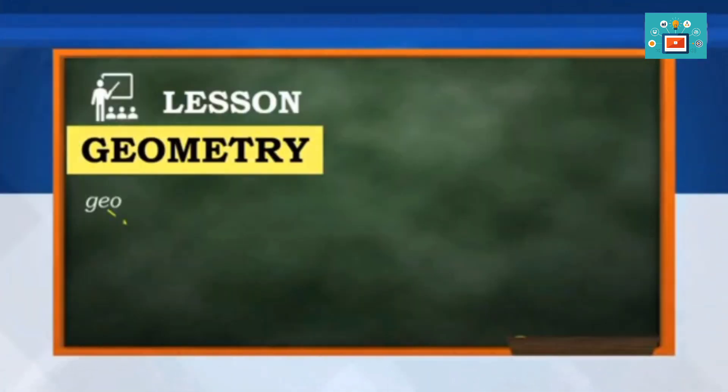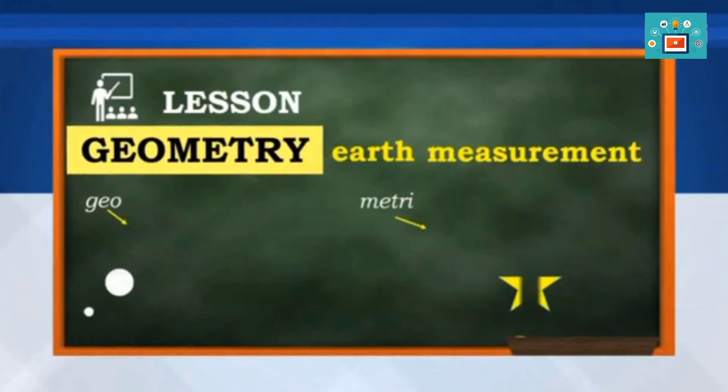Let me share to you facts about geometry. It comes from two Greek words, geo, meaning earth, and metri, meaning measurement. Thus, the word geometry means earth measurement.